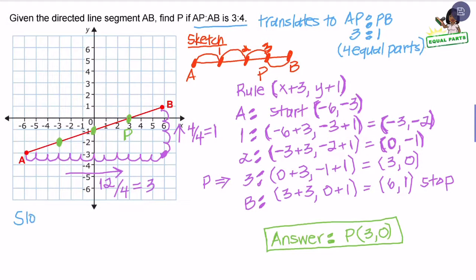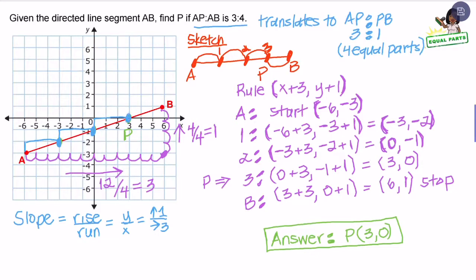I want to bring your attention to one more thing. On the coordinate grid, you have found the slope — the change in Y over the change in X, or rise over run. The change in Y is up one unit and the change in X is to the right three units. So starting from point A, you can go up one unit and then right three units to reach the first ordered pair, negative three and negative two. Continuing with the slope, you'll reach each of the ordered pairs already calculated. This works when the change in Y and change in X are integers.